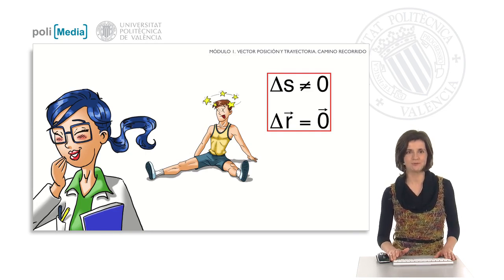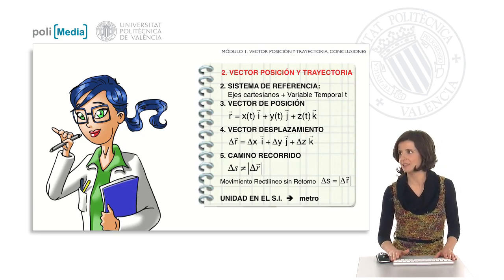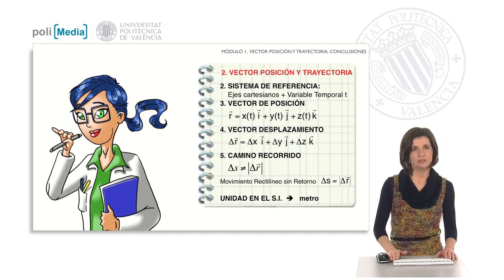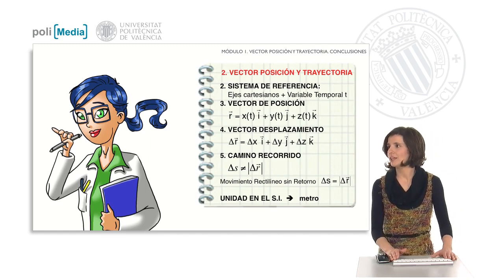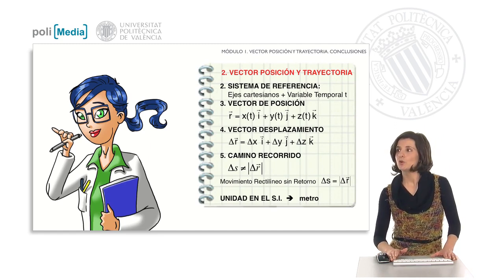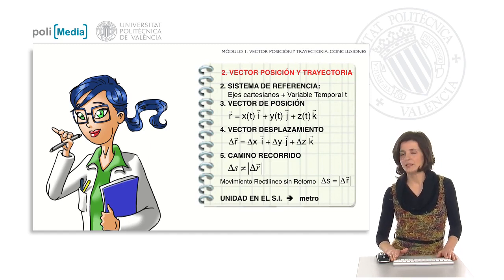But it seems that J is not very certain about this. The time has come for Amanda to remind us of the most important things we have seen in class. We have seen the need to use a reference system to univocally define the position of an object in space — in this case, the Cartesian axis and the temporal variable t. We have expressed the position vector by its Cartesian components, and seen that they depend on the instant t. We have seen the displacement vector increment of r as the subtraction of the position vector at two different instants, and that its modulus only coincides with the increment of s — the path traveled on the trajectory — if the movement is rectilinear and non-returned. All these physical quantities are measured in the international system in meters. See you soon.